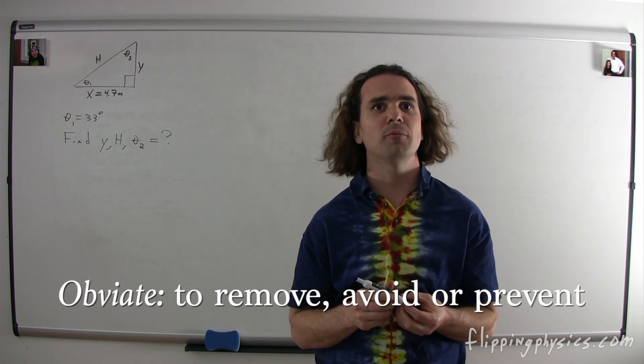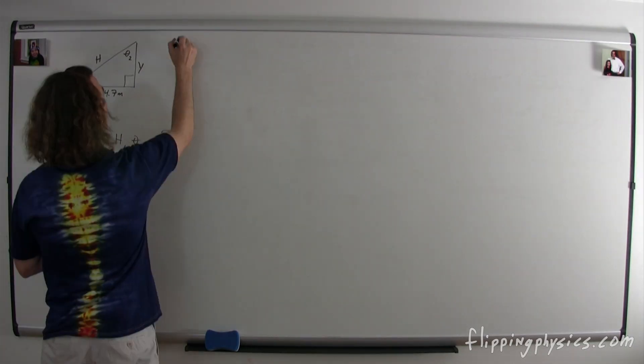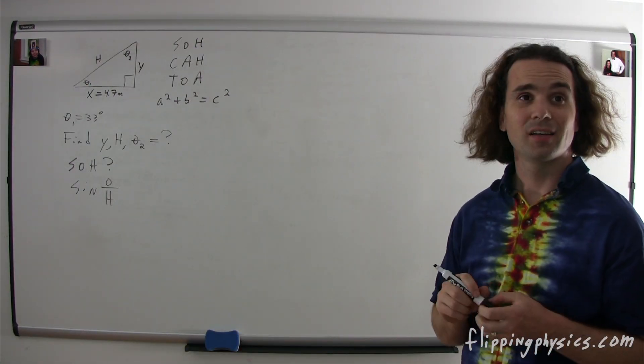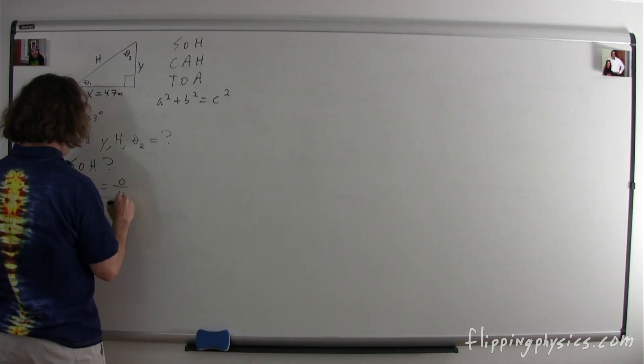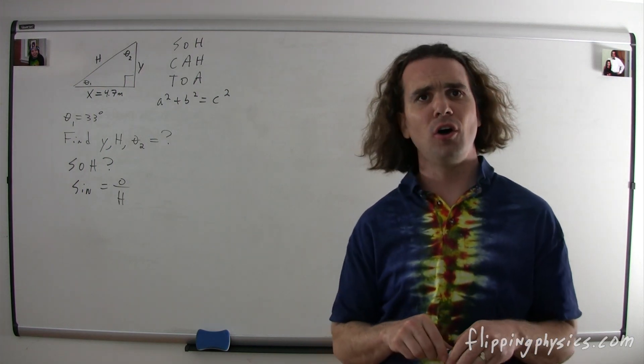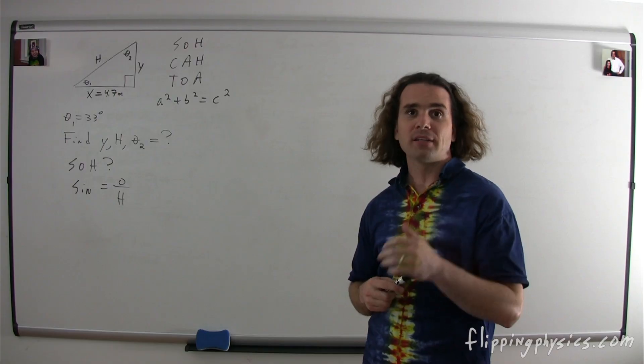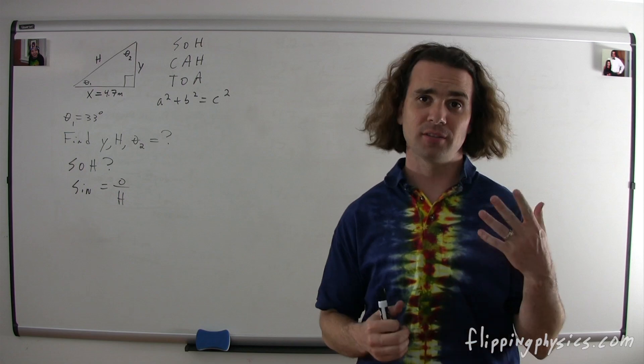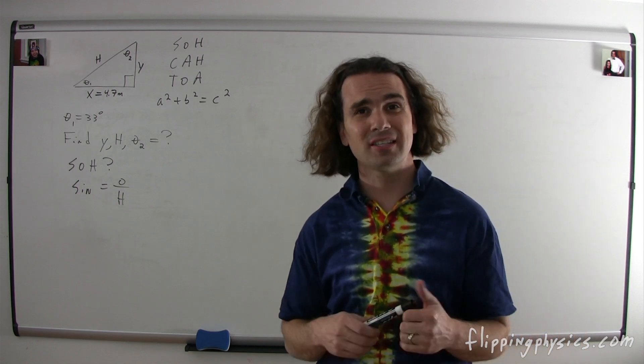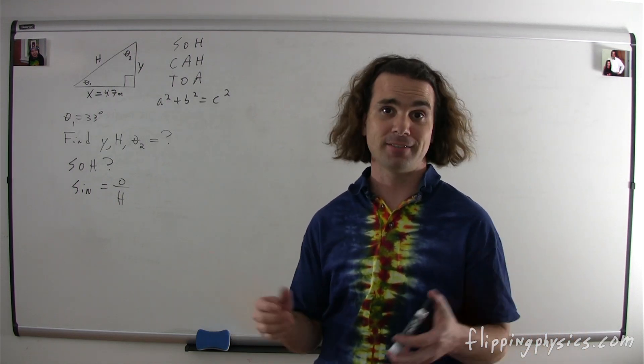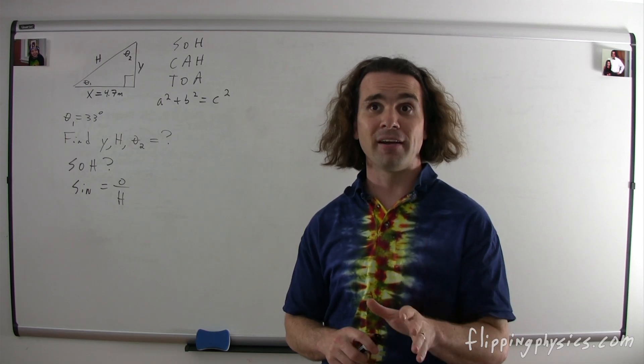Let's actually start by just defining SOH. Bo, what does SOH mean? SOH means sine opposite over hypotenuse. Like that? No, sine equals opposite over hypotenuse. Right. How many of you think SOH means sine equals opposite over hypotenuse? Great.